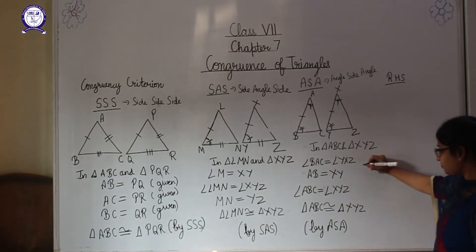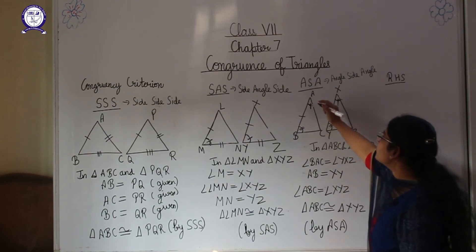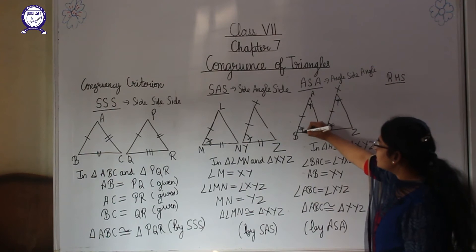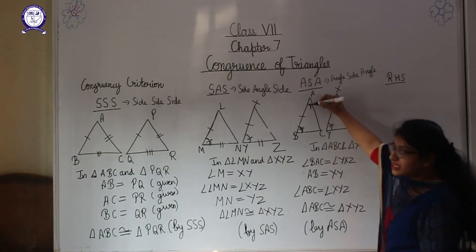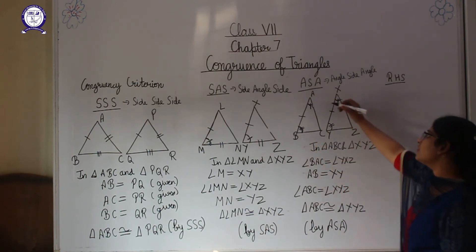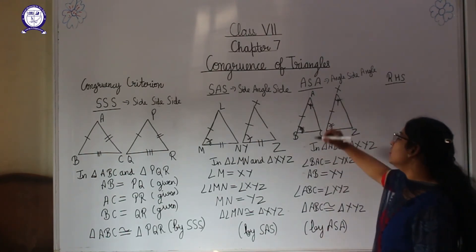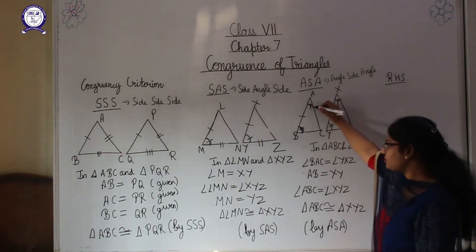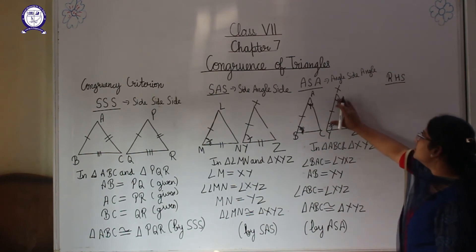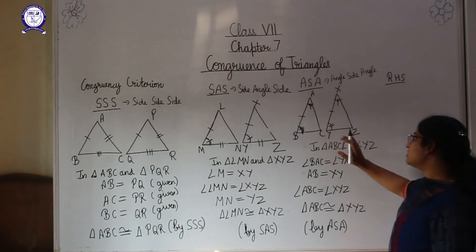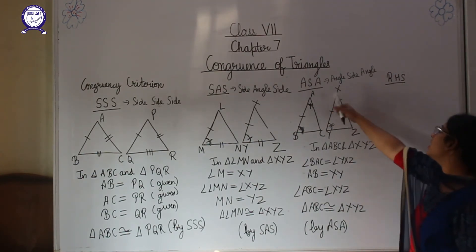In ASA criteria, the side used must be common to both angles. Since we are using angle A and angle B, the side AB — which lies between them — must be used. We cannot use AC or BC since each of those is adjacent to only one of the two angles. The side common to both angles is the one that should be used in ASA.